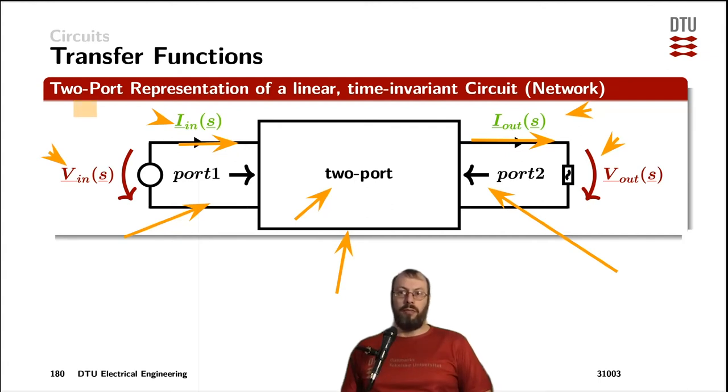Typically for sources, as it's in this case here on the input side, you would define the voltage and the current in opposite directions. And for impedances, for sinks, for loads, for example, you would define the current and the voltage going in the same direction. And that makes it easy to balance the energy and the power going into the circuit from the sources and the power being used in the circuit in all the impedances.